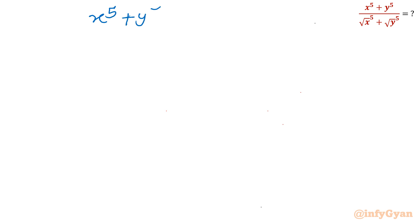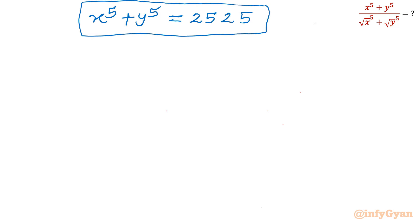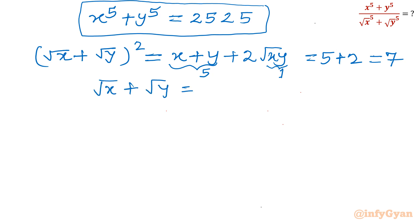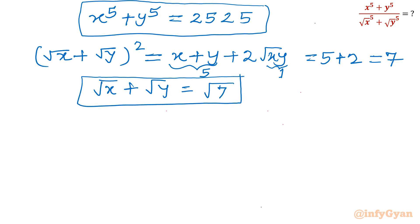Now for the denominator calculation. I will consider (√x + √y)² = x + y + 2√(xy) = 5 + 2√1 = 5 + 2 = 7. So √x + √y = √7. We take only the positive root since x and y are both positive, so √x and √y are both positive.